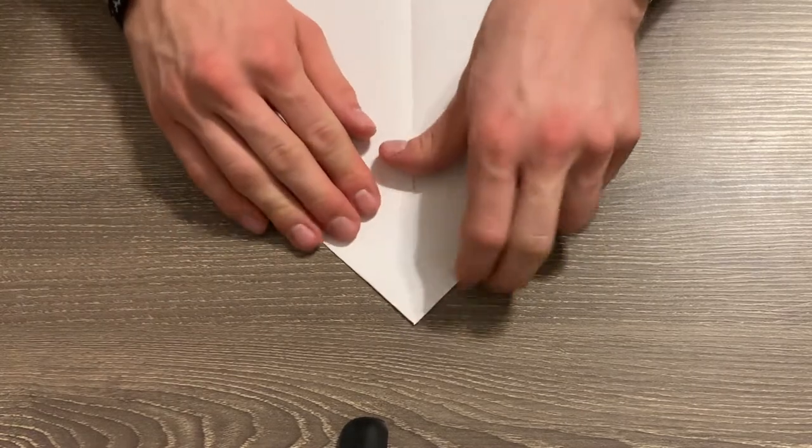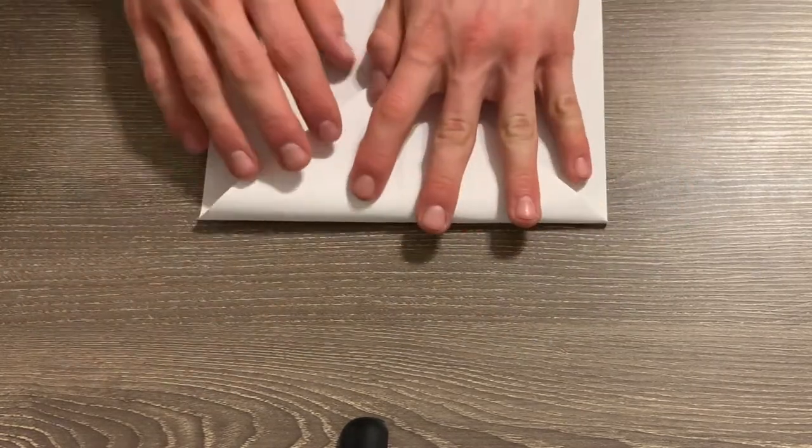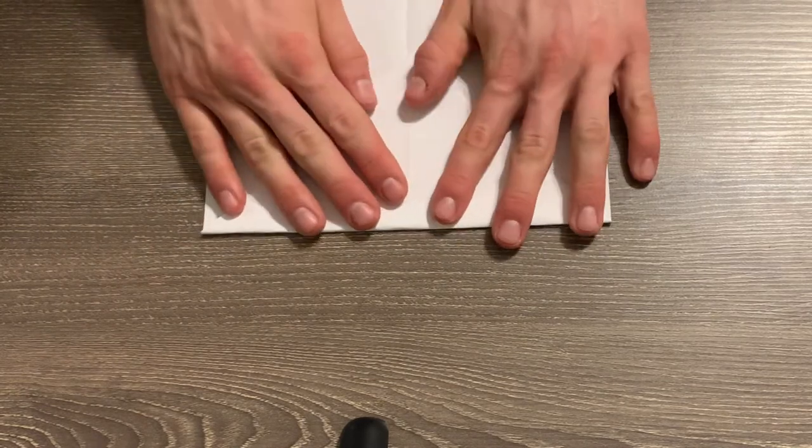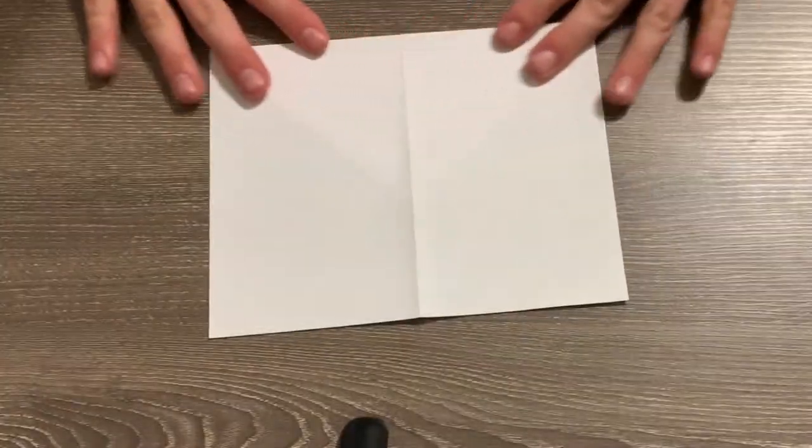Alright, now once we have our corners folded down, we're going to fold it all the way down until our paper looks like a square. Doesn't quite look like a square from this side. If you hold it here, it's pretty close to a square.